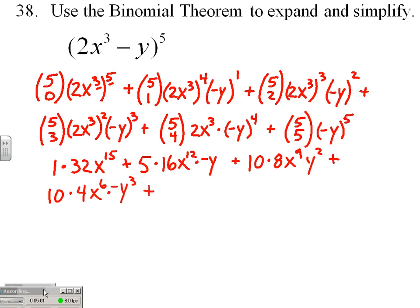Plus C5-4. C5-4 is 5. Times 2x cubed. Times negative y to the 4th. The negative gets absorbed. Y to the 4th.